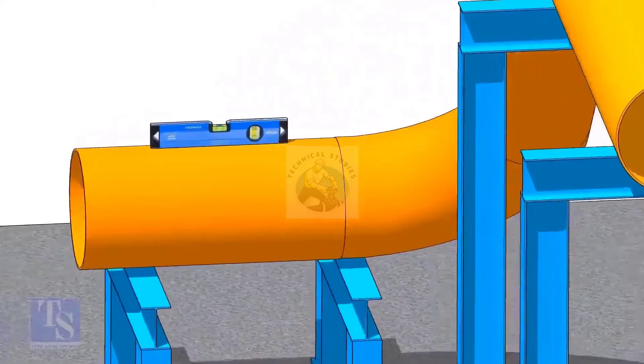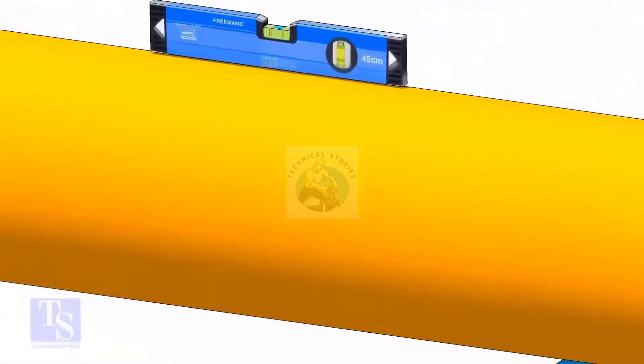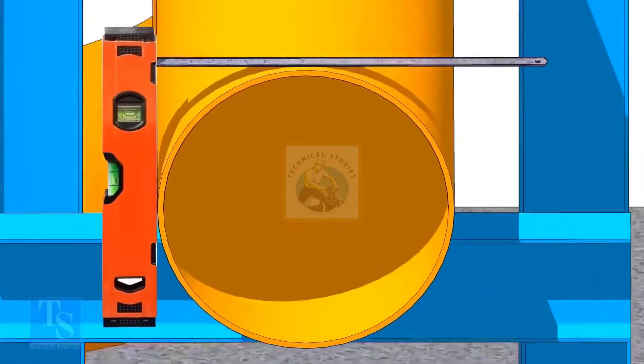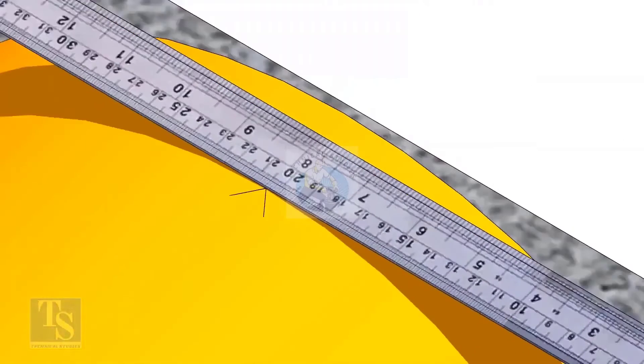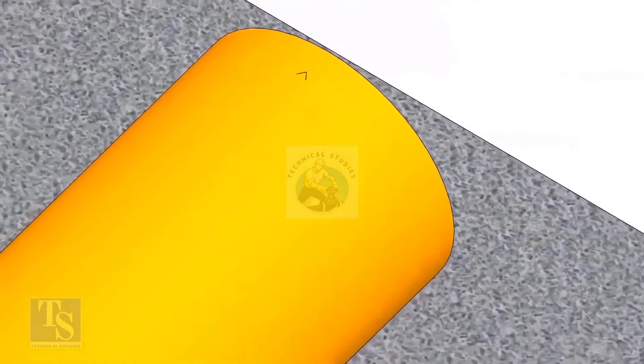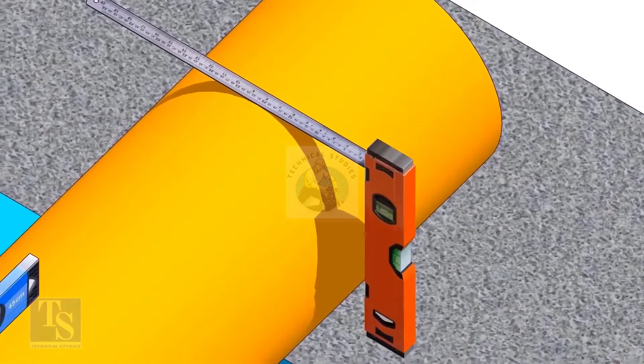After leveling the pipe, mark the center line. Don't forget to punch mark this line. Mark half OD at 300mm apart. This pipe OD is 406mm, so mark 203mm from the vertical level bottle on the top of the pipe, and draw a line connecting these marks.